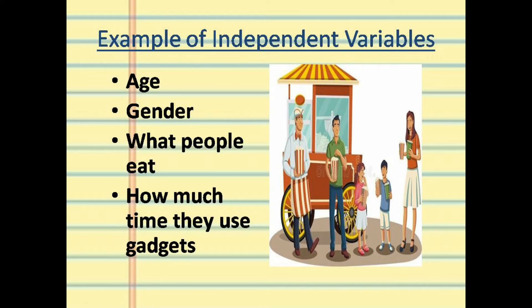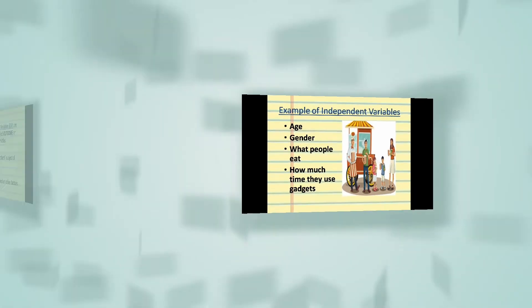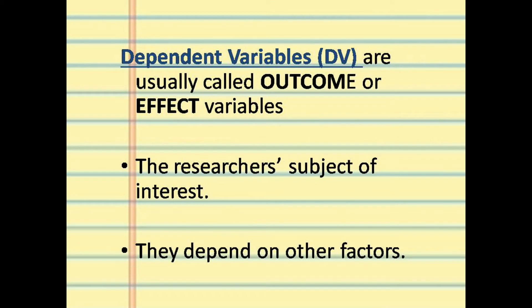Does age affect the study? Yes. Does gender affect the study? Yes. What people eat also affects the study, as does how much time they use gadgets. These all have an effect. Now, what is a dependent variable? Dependent variables are usually called outcome or effect variables — meaning they are the result of the cause or the independent variable.